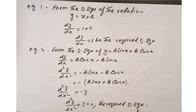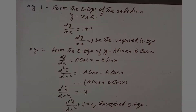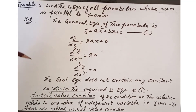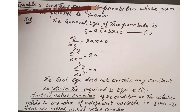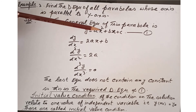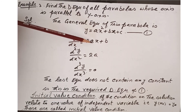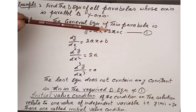In general, however many constants are involved in the equation, we differentiate that many times and by eliminating the constants we get the required differential equation. In example three, find the differential equation of all parabolas whose axis is parallel to the y-axis. The general equation of such a parabola is y equals ax² plus bx plus c, which has three arbitrary constants a, b, and c, so we differentiate three times.